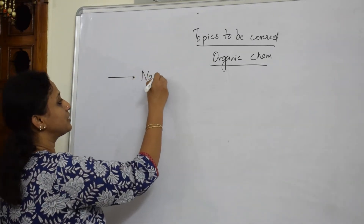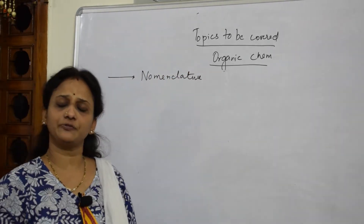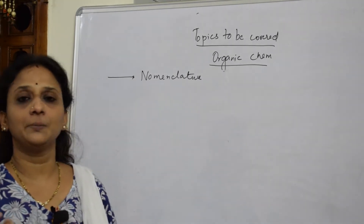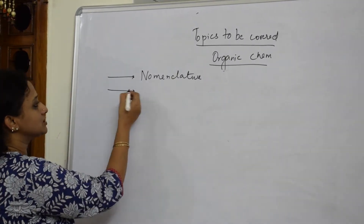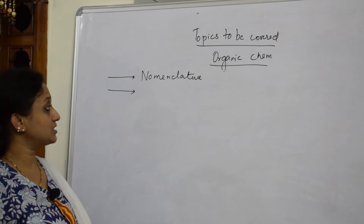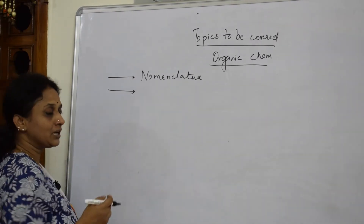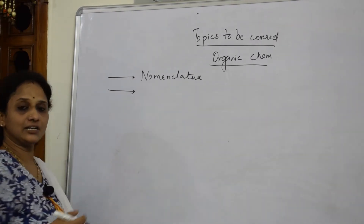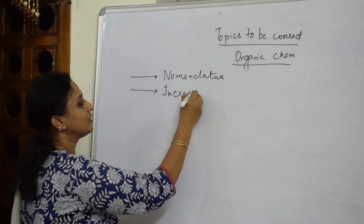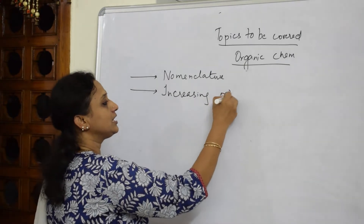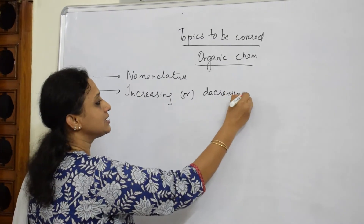The board specifically stresses different topics in organic chemistry. One question that commonly comes is from nomenclature — you have to learn nomenclature for all the chapters prescribed in the syllabus.